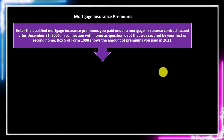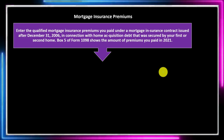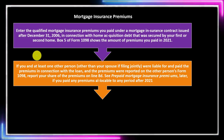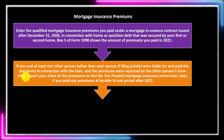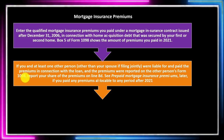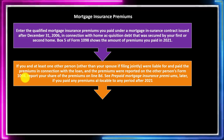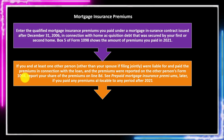Mortgage insurance premiums: enter the qualified mortgage insurance premiums you paid under a mortgage insurance contract issued after December 31, 2006, in connection with home acquisition debt secured by your first or second home. These should generally be shown in box 5 of Form 1098, showing the premium amount for 2021. If you and at least one other person — other than your spouse if filing jointly — were liable for and paid the premiums, but they were reported on the other person's Form 1098, report your share online 8d.